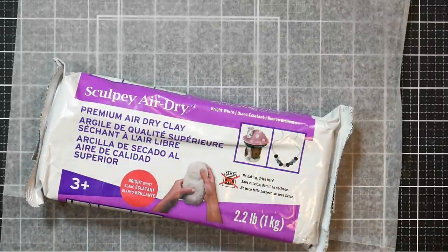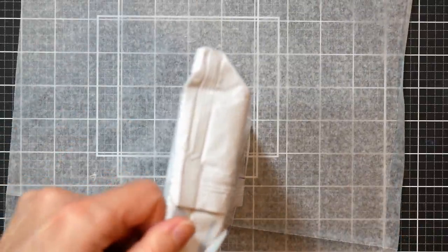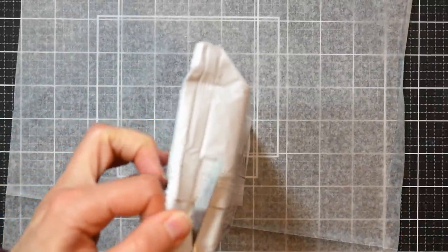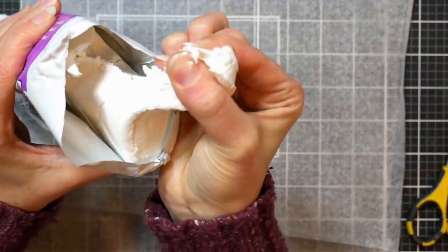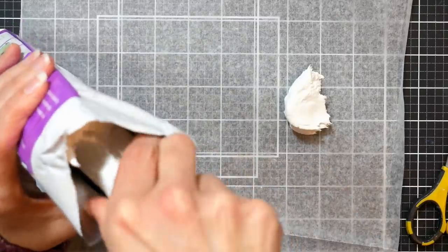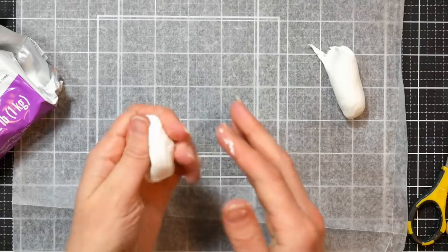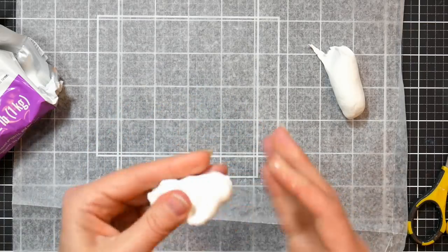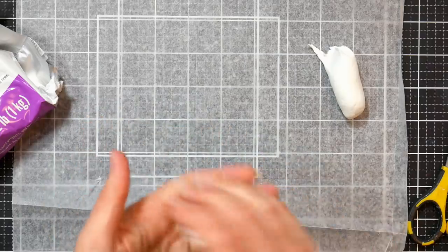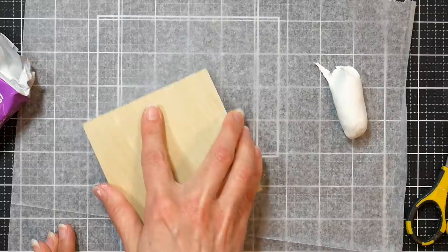I'm really curious about this air dry clay because I wanted to make some brush rests and thought this would be the perfect project to try that out with. I'm pulling out about two ounces worth of clay. I don't want to have too much out because I'm not sure how quickly this will dry. When you open the clay, just cut off enough past the seal so you can fold over and seal it back up again.